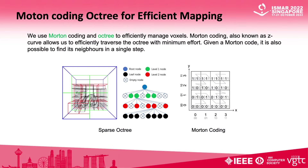We seek to accelerate this method by introducing multi-level octree and local latent embeddings. We use Morton coding and octree to efficiently manage voxels. Morton coding, also known as Z-curve, allows us to efficiently traverse the octree with minimum effort. Given a Morton code, it is also possible to find its neighbors in a single step.